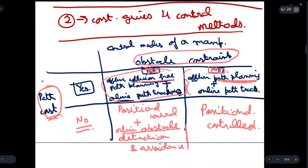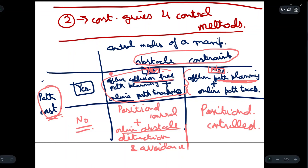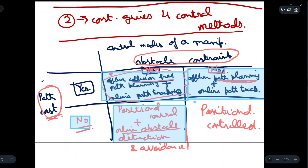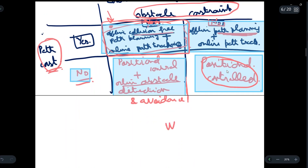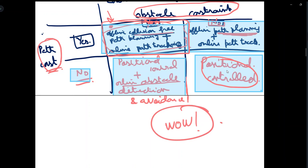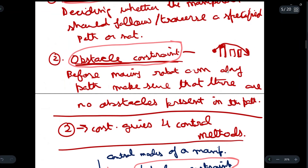To summarize, we have four control methods defining different position controls, collision-free planning, and path tracking. The first box considers both constraints and is the most optimal. The second considers only the path constraint. The third considers only the obstacle constraint. The fourth considers neither constraint and is the least effective. The most optimal control method is the first one where both constraints are present. I hope this is clear — see you in the next video.